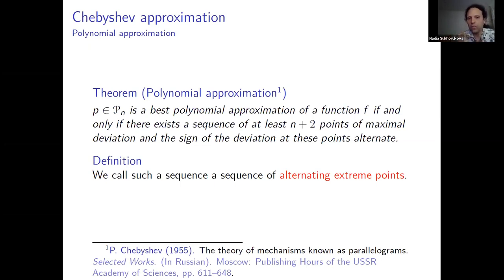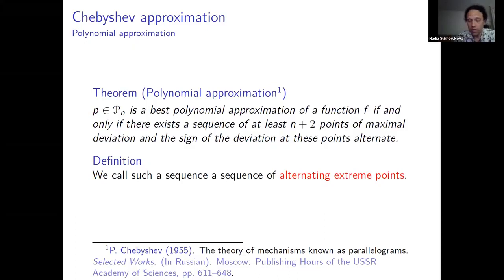In the second half of the 19th century and first half of the 20th century, there was a lot of research generalizing these results to functions beyond polynomials. Polynomials are good, but to reach very good approximation you need very high degree, which leads to robustness issues when implementing — so people started looking at other alternatives.